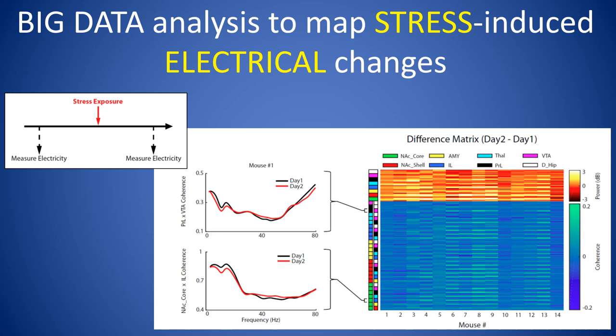Here's our experimental schematic. We're going to record electrical activity as a mouse performs motivated behaviors. We're then going to subject a mouse to stress. Finally, we're going to record electrical activity again as a mouse performs the same motivated behaviors it did before stress. This will allow us to ask the central question: how did the stress exposure change electrical processing in the mouse's brain?